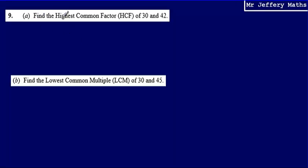This is question 9. Here we're asked to find the highest common factor of 30 and 42.